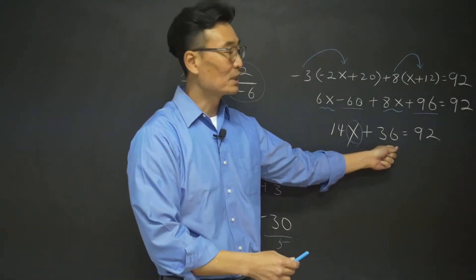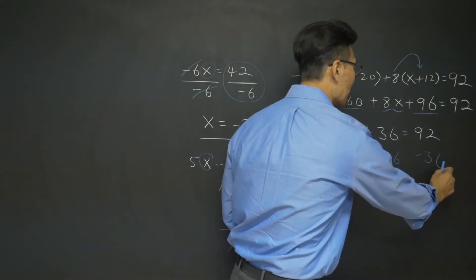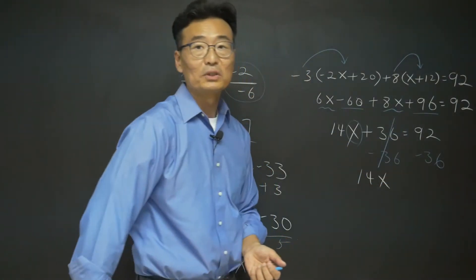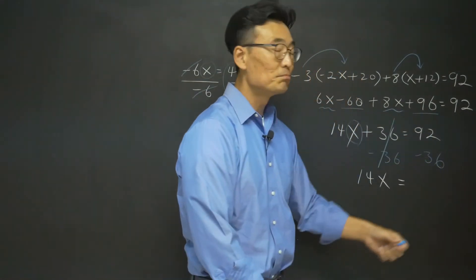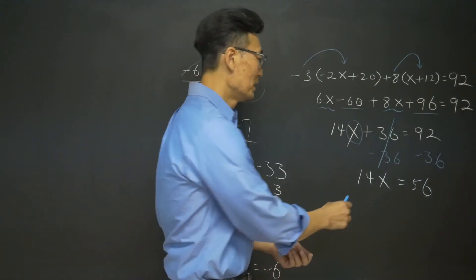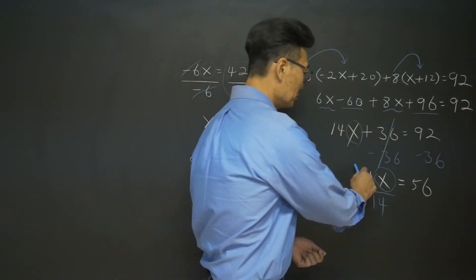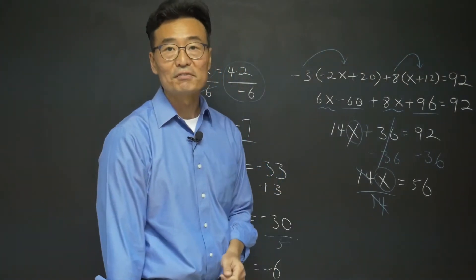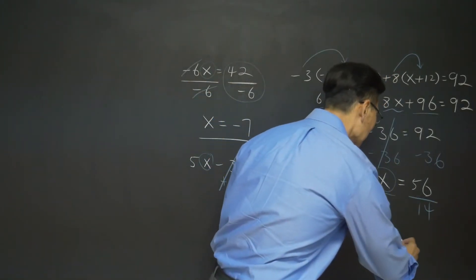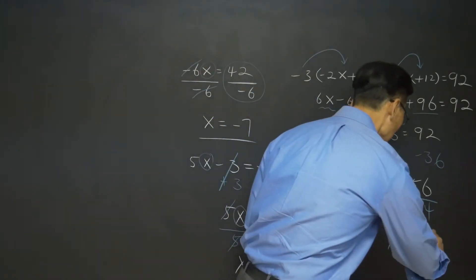First, get rid of the 36 before touching the 14. We subtract 36 from both sides, which cancels the 36 on the left, leaving 14x, and 92 minus 36 gives us 56. The last step is to divide both sides by 14. The 14 on the left cancels, and 56 divided by 14 equals 4, which is our final answer.